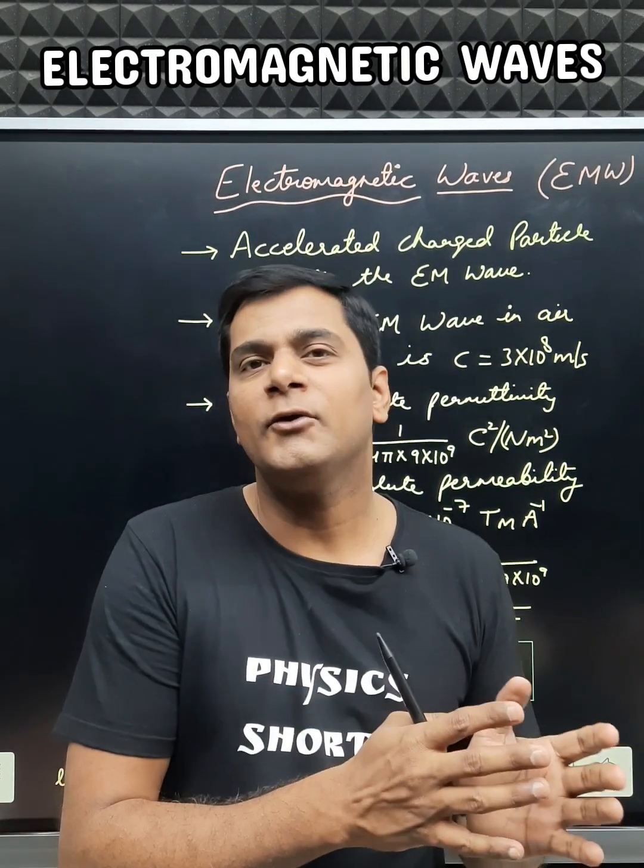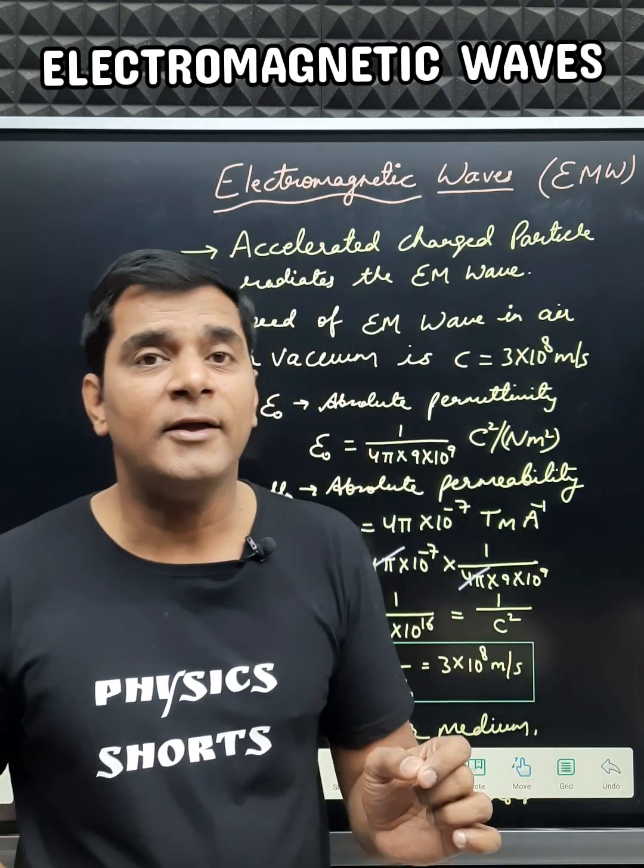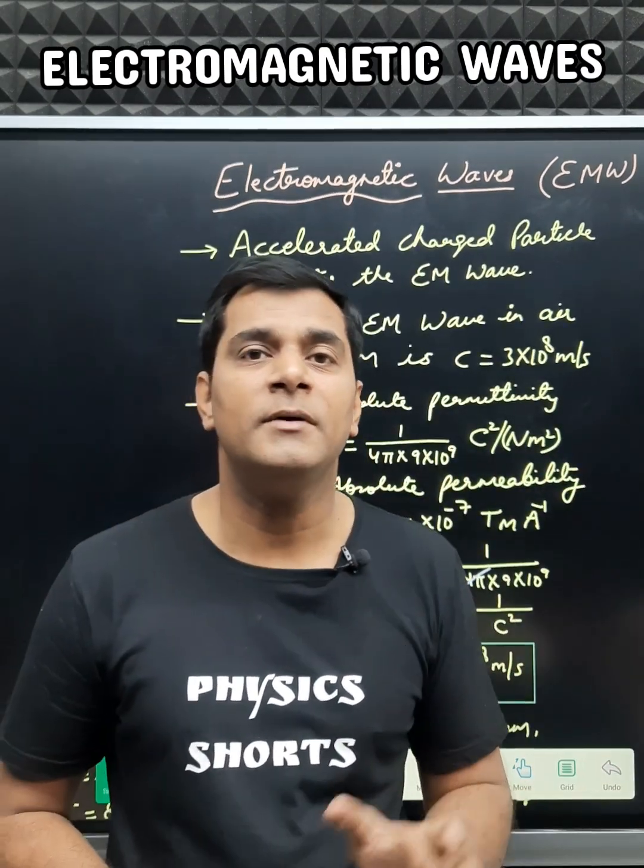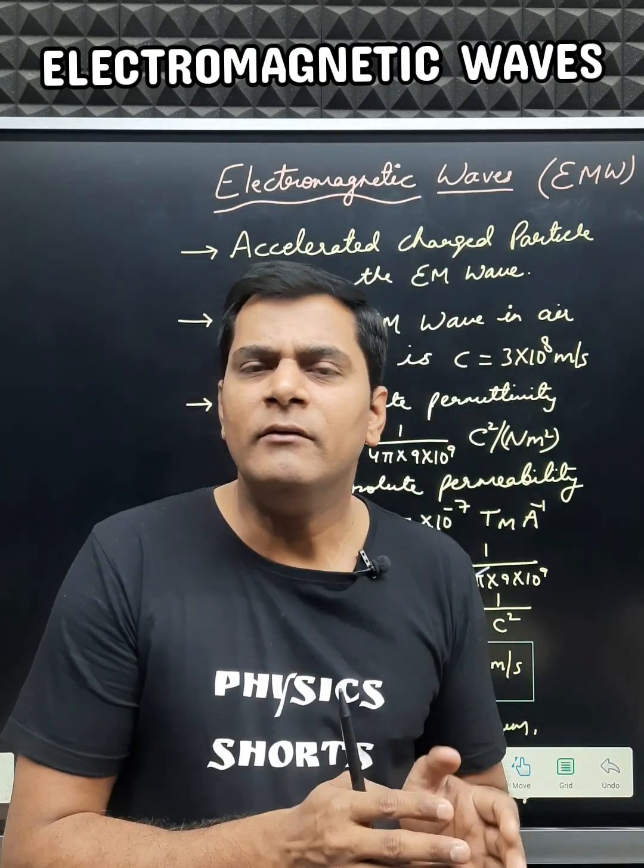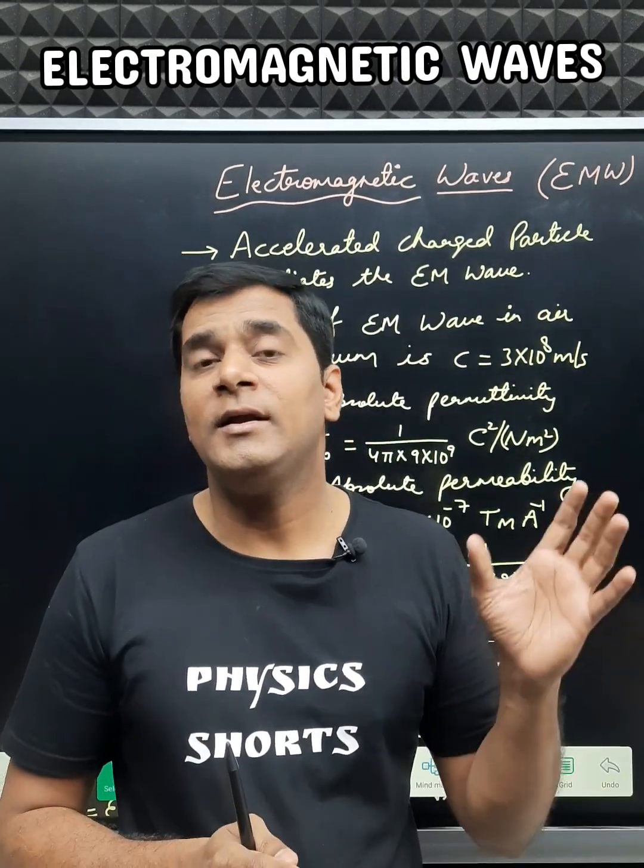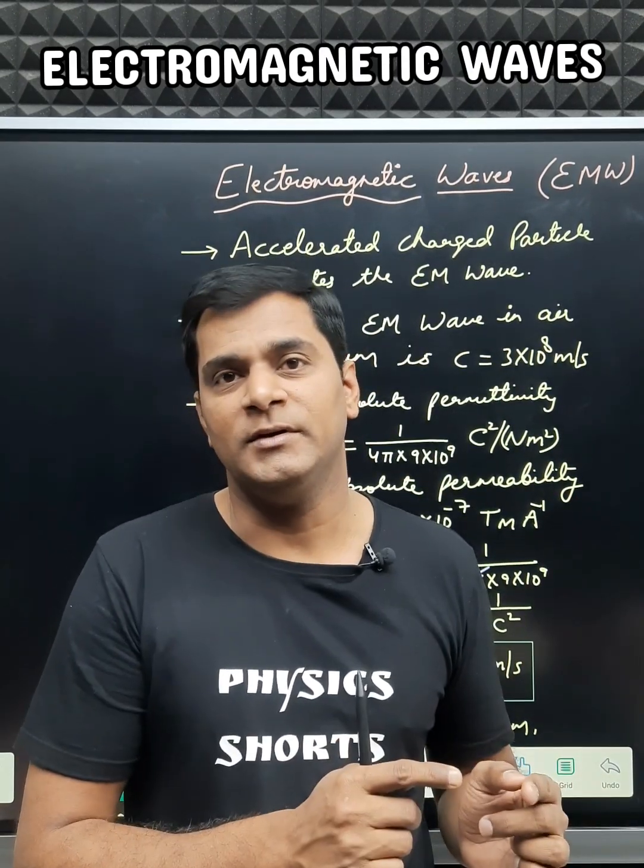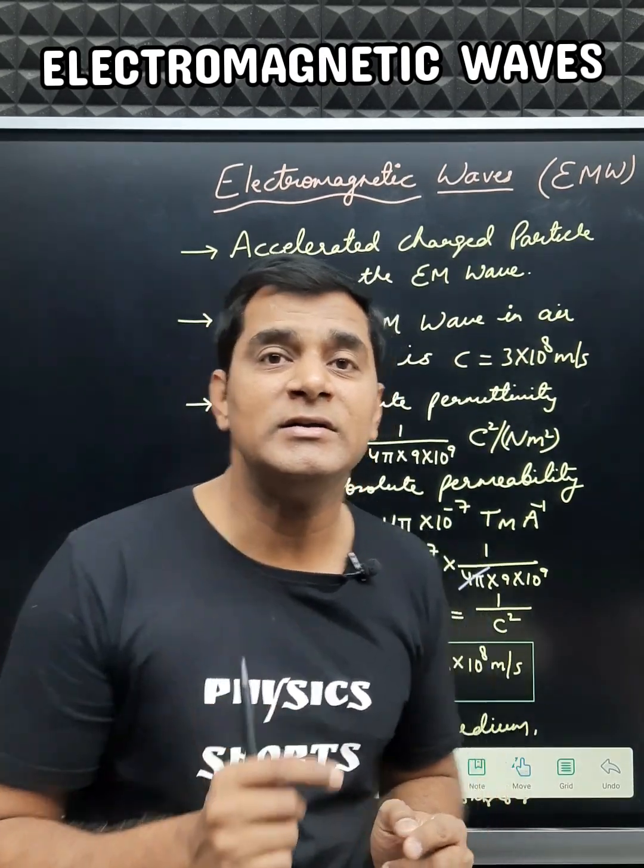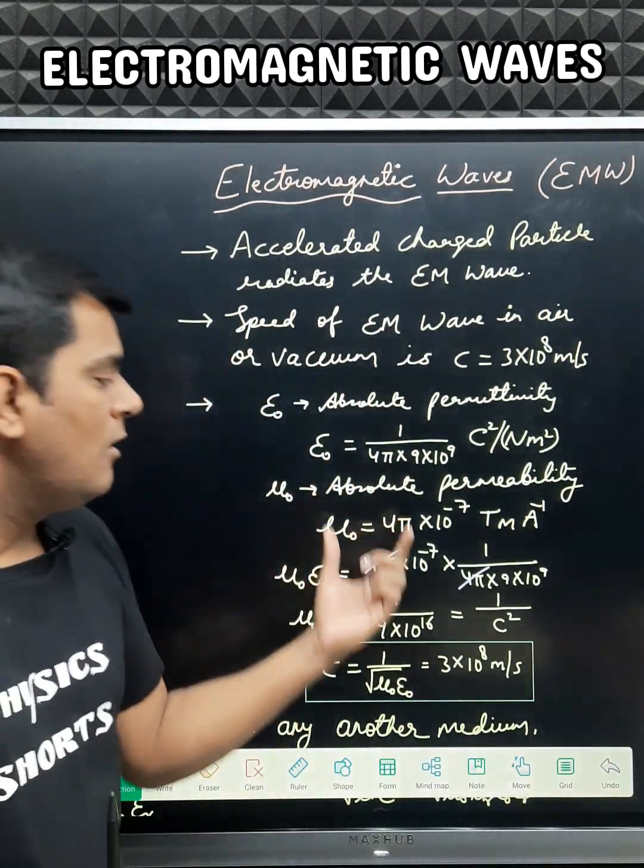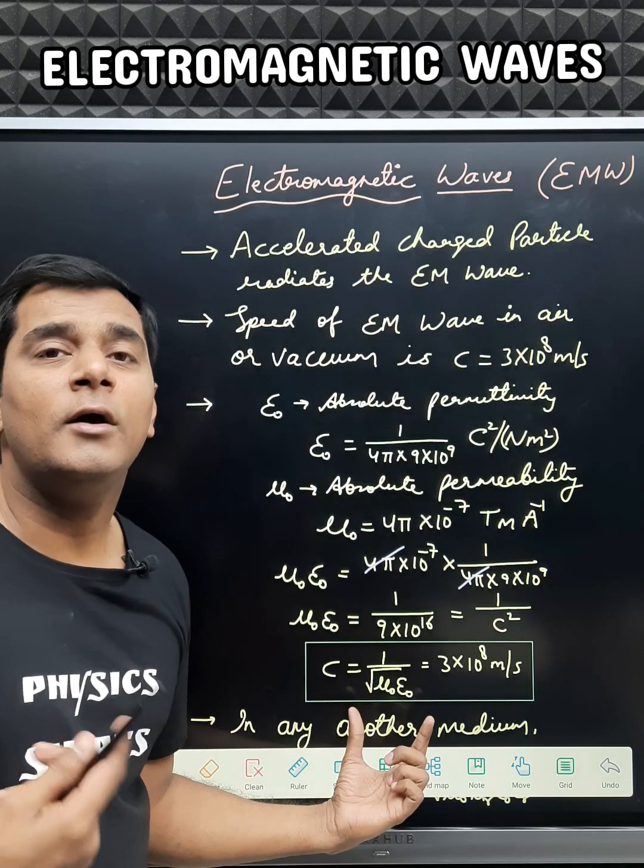The speed of electromagnetic radiation in air or vacuum is 3×10^8 meters per second. This can be given in terms of permittivity and permeability of free space, and c equals 1 over the square root of mu_0 epsilon_0.